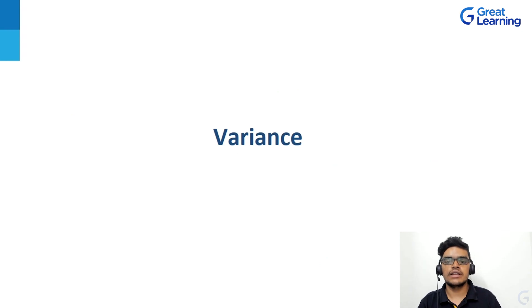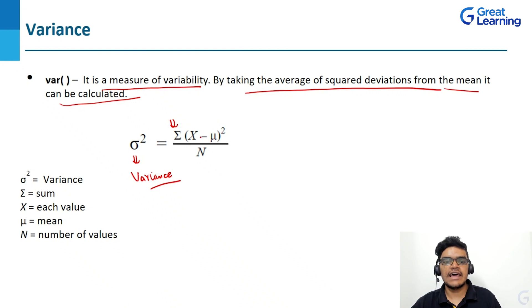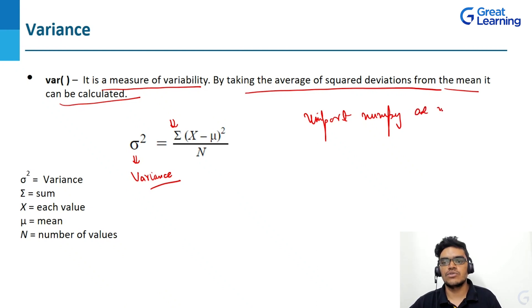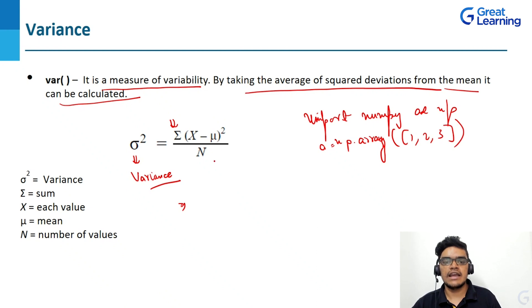Variance is a measure of variability, calculated by taking the average of squared deviations from the mean. The formula is: sigma squared = summation of (X - mu)^2 / n, where sigma squared is variance, X is each value in the array, mu is the mean, and n is the number of values. I'll import numpy as np and create a simple 1D array a = np.array([1, 2, 3]).